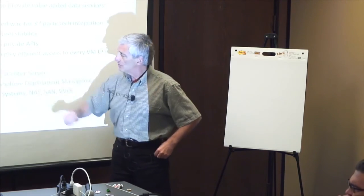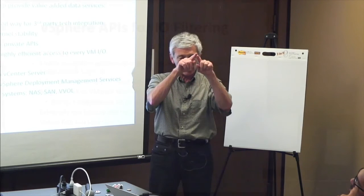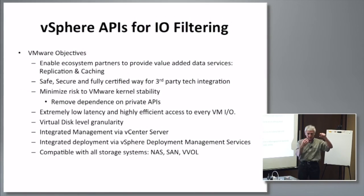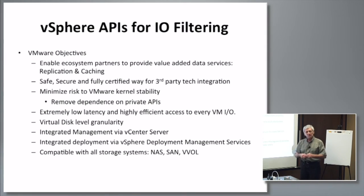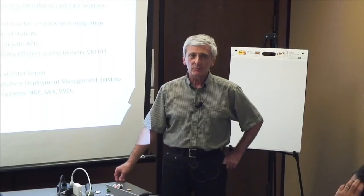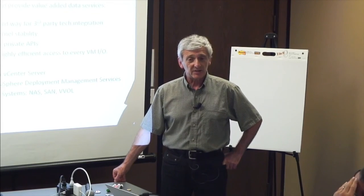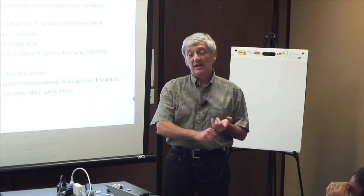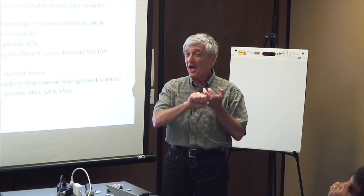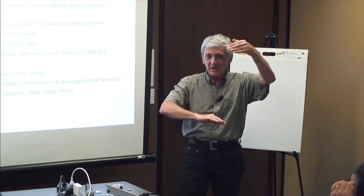We will have virtual disk level granularity because we're positioned as a virtual machine — we see virtual disks, not LUNs. That puts us in front of raw device mapping as well, because we're sitting in the virtual SCSI layers. And because of that, we support NFS, VVols, everything, because they switched to this approach.